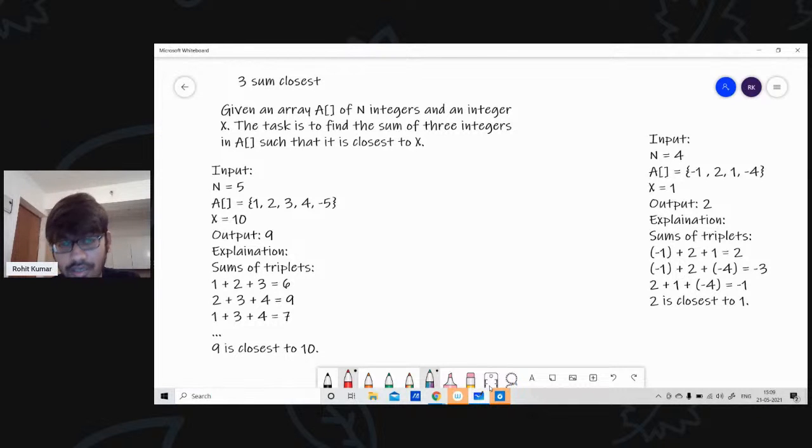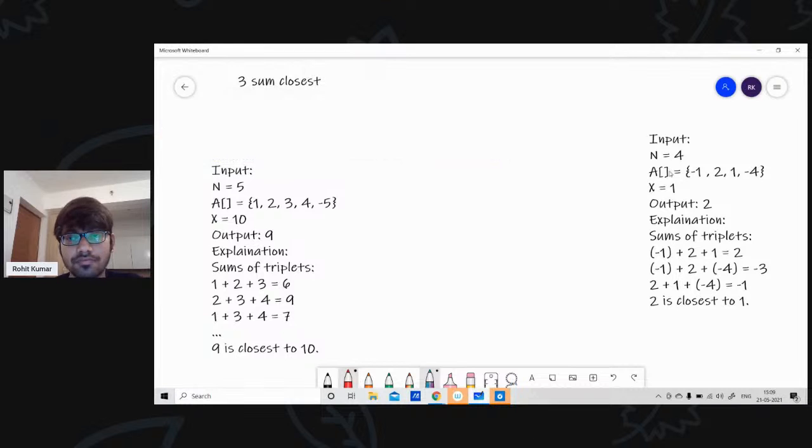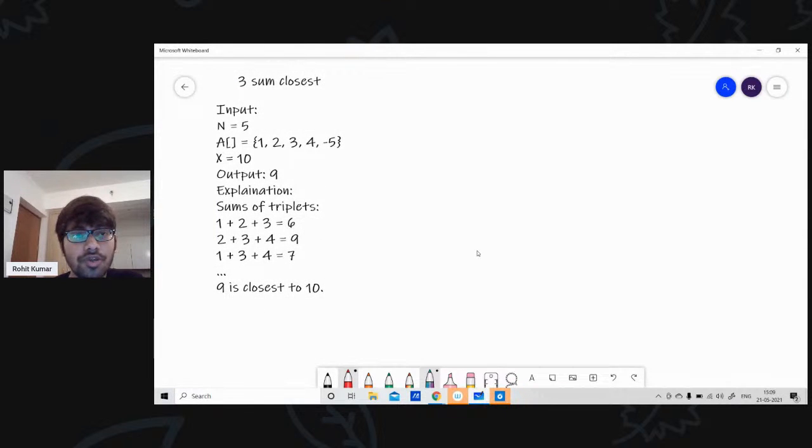Great. So if the question is clear, now let's go to the logic of this. If the question is clear, let's go to the brute force approach of this solution. Like what we can do? I think most of you will be knowing this. So what we are going to do is, if I have this given input array, 1, 2, 3, 4, minus 5, we can take all possible triplets, all possible combination of triplets.